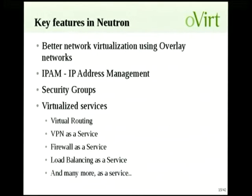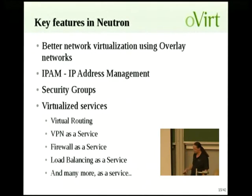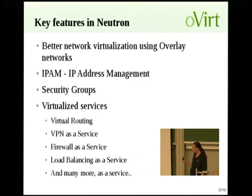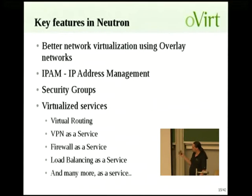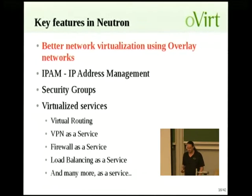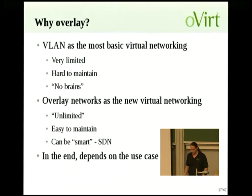The key features we're looking to integrate: better network virtualization using overlay networks, IP address management, security groups, everything-as-a-service, and virtual routing. oVirt currently uses VLANs — the naive way to virtualize networking. VLANs are limited: it's a 12-bit field giving approximately 4,000 VLANs, and in real scenarios you wouldn't have more than a couple hundred because switches can't hold more than that.